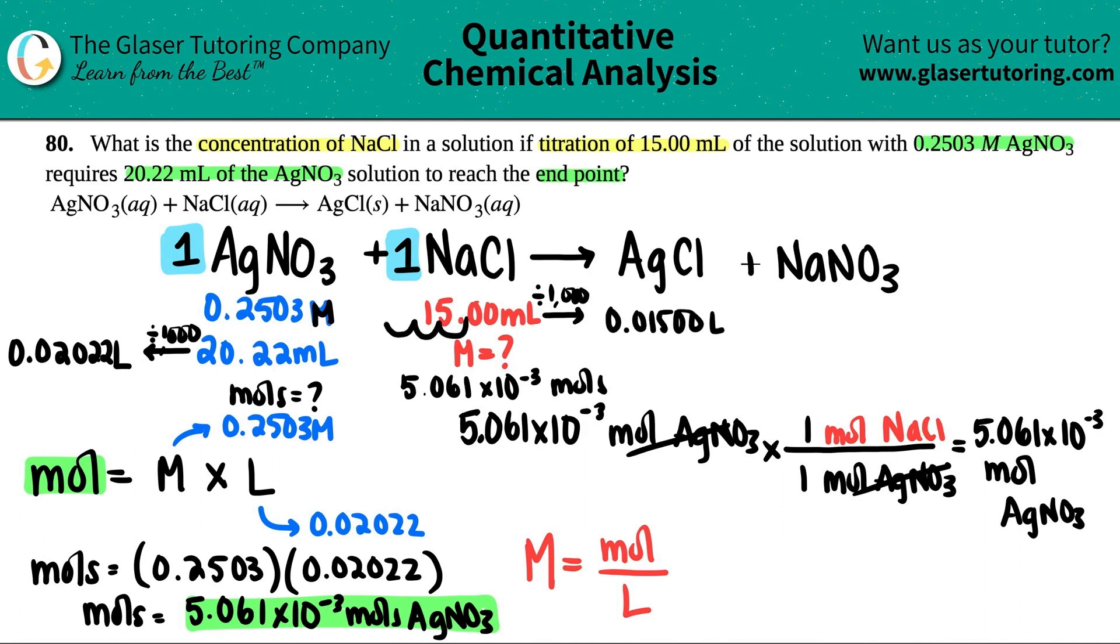So now molarity would equal the moles 5.061 times 10 to the negative three divided by 0.01500. And then just solve. And there's my answer. I'm looking back to seeing how many sig figs I need to use. They all have four, so I'm going to keep it as four sig figs. And let me just see if I didn't round that number, would I get the same answer? Probably. Yeah.